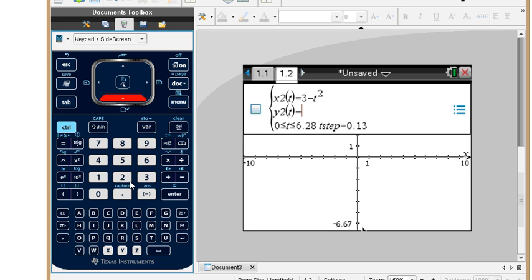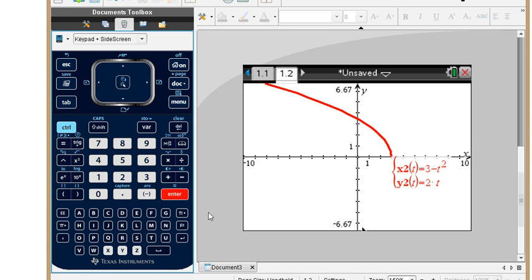And then for our domain, our value of t, we're going between 0 and 10. So I'm going to change the 6.28 to 10. And so we graph, and this is what we see.